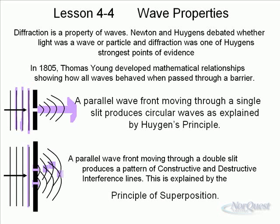From the top slit and the bottom slit, you get areas where wave crests occur. The lines represent wave crests, and in between the lines you have wave troughs. When a crest meets a crest, something interesting happens — all these points of intersection are where crests are meeting crests. What happens when a crest meets a crest, or when a trough meets a trough?